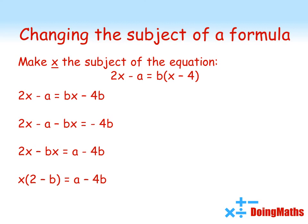Now we've only got the letter X appearing once in our whole equation. We're a lot closer to making X the subject. We've got X times 2 minus B equals A minus 4B. Just as before we're multiplying X by something so let's divide that through and there we go. X is equal to A minus 4B all divided by 2 minus B. X is now the subject of the equation.